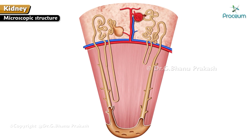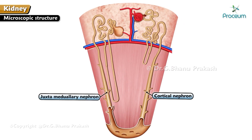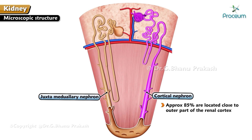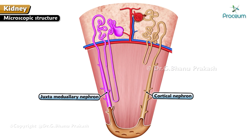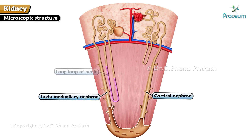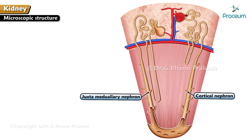There are two types of nephrons: cortical and juxtamedullary. Cortical nephrons, approximately 85%, are located close to the outer part of the renal cortex, have a short loop of Henle, and are mainly regulatory and excretory in function. Juxtamedullary nephrons, approximately 15%, have their glomerulus near the junction of the renal cortex and medulla, have a long loop of Henle, and their major function is concentration or dilution of urine.